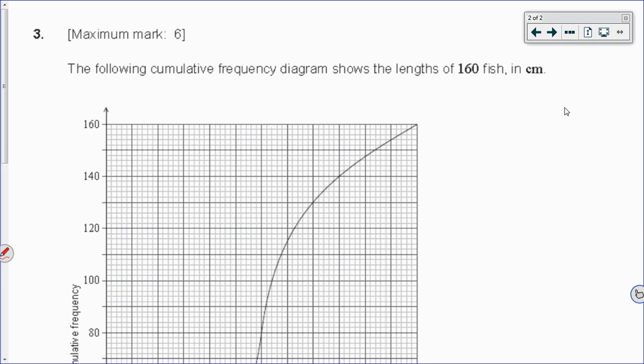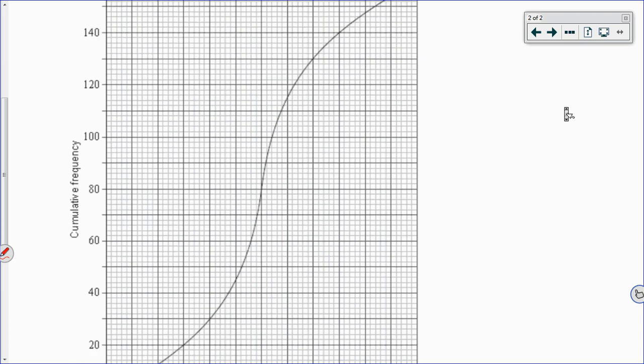All right, so this is a cumulative frequency graph, basically a one-variable stats question, and the variable that's been collected is the lengths of 160 fish. You can see that the top of the graph on the y-axis goes up to 160. That's because the y-axis is total frequency, cumulative frequency, up until that length, and the length is way down here on the x-axis.